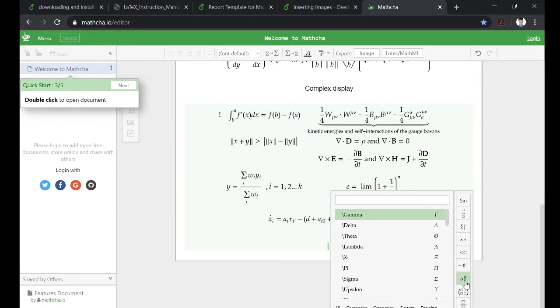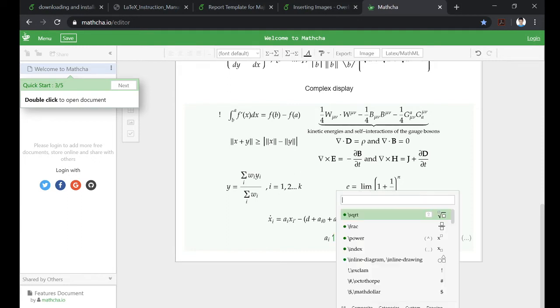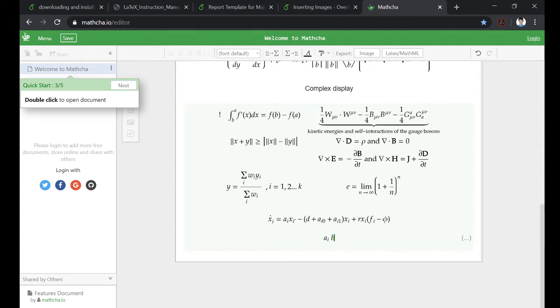You can choose all the symbols from here and type it. Two more things I want to tell you: if you have to type something in subscript you use the underscore symbol. If you have to type something in exponent you use the caret symbol.